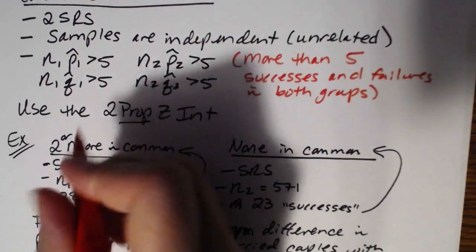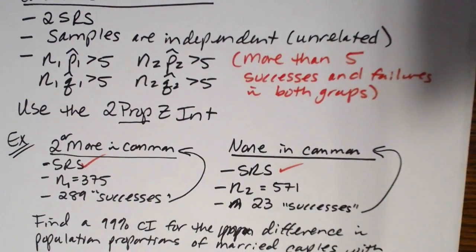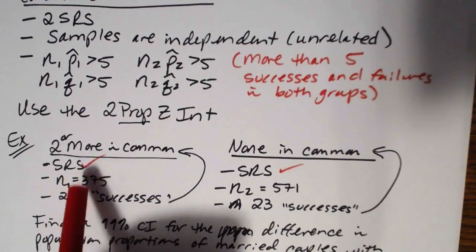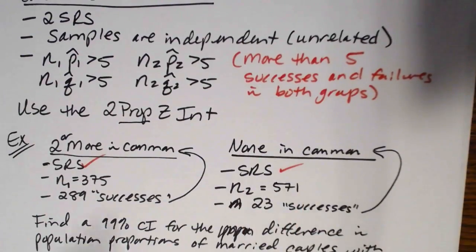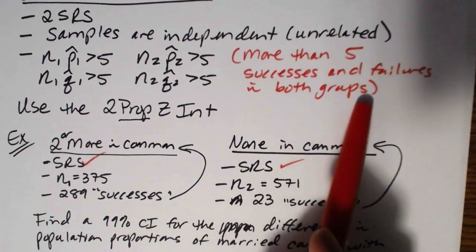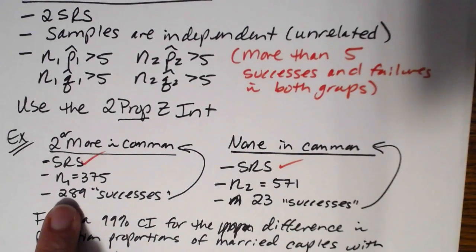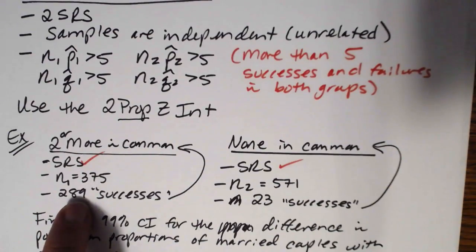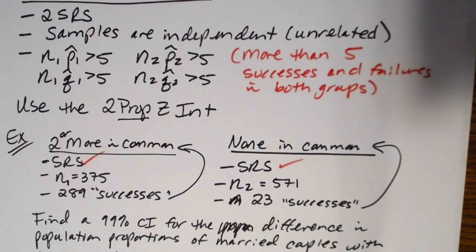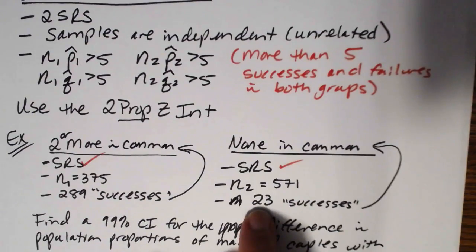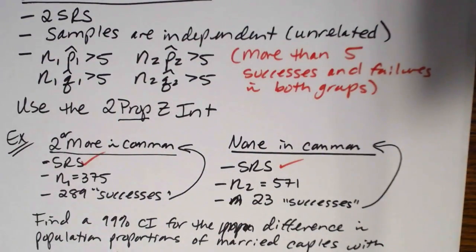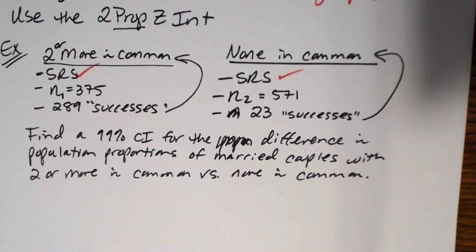First, let's check our conditions. Do we have two simple random samples? Yes — that was stated in the problem. Are the samples independent and unrelated? One SRS of 375 and a separate SRS of 571, so yes, they're likely independent. More than five successes and failures in both groups? Group one has 289 successes — clearly more than five — and 375 − 289 = 86 failures, also more than five. Group two has 23 successes (greater than five) and 571 − 23 = 548 failures (also greater than five). All conditions are met.